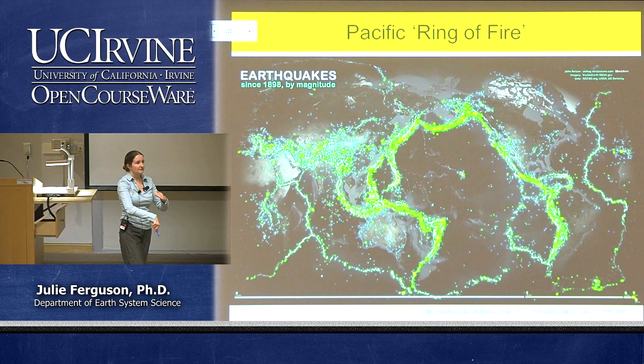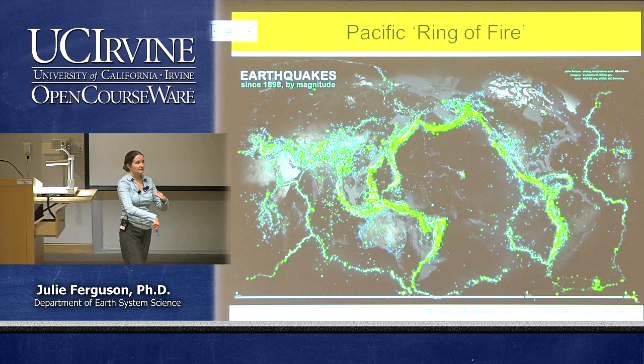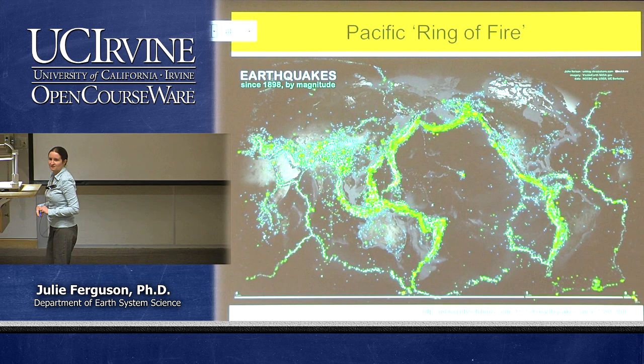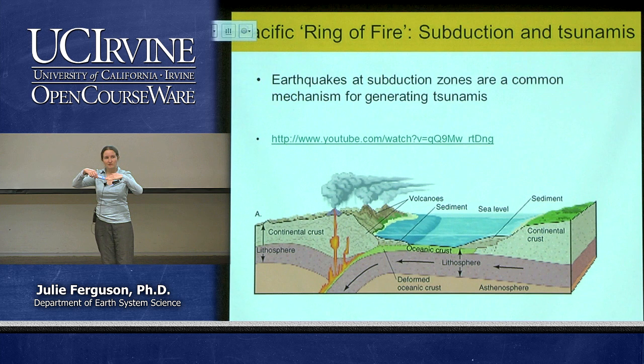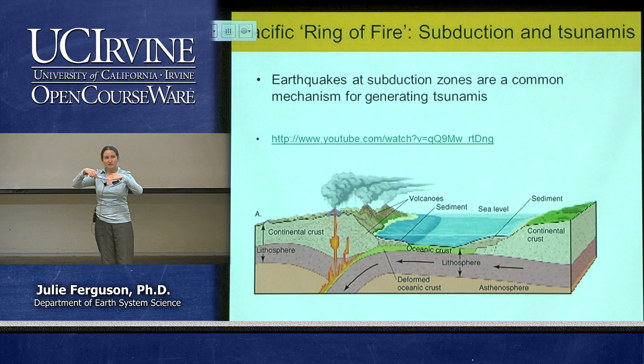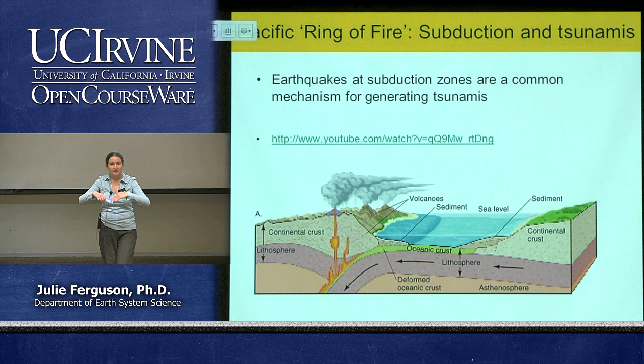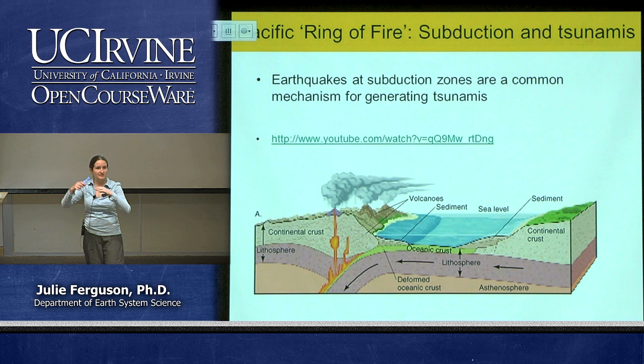Subduction zones also produce the world's biggest earthquakes. Also associated with these zones are tsunamis. As the ocean plate slides down, the overlying plate gets bent down with it, then suddenly snaps back and shoots upward, raising the seabed by several meters — possibly tens of meters. This shifts the entire overlying column of water — roughly three kilometers deep — upward by several meters, sending waves shooting out in all directions. We'll continue on Friday.